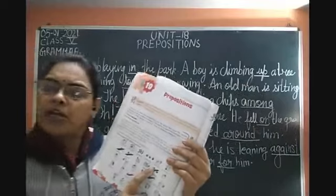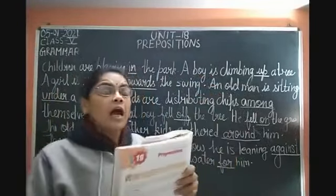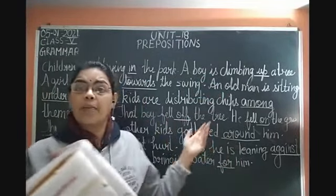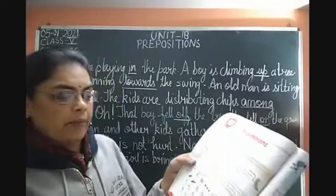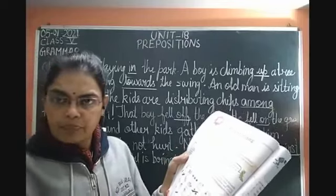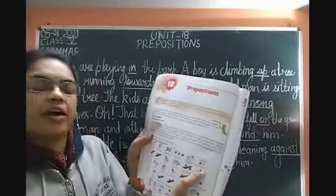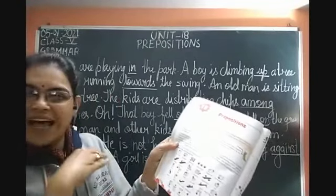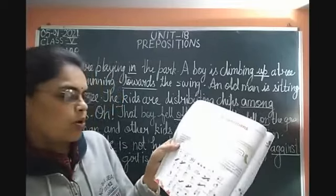Behind — everyone knows this. Koi bhi cheez peche hai to 'behind.' Just like the board is behind me. And in front of is used for saamne, opposite direction. Along — saath mein. Jab koi do cheezein saath mein hain, toh 'along' bolenge.